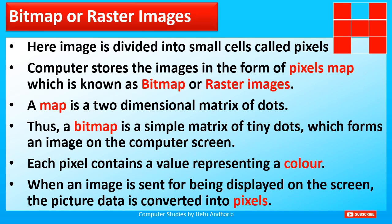You can right-click on your desktop and click on screen resolution to see your pixel count. For example, 1366 multiplied by 768 gives approximately 10,49,088 pixels. By setting the screen resolution to more pixels, clarity keeps increasing. A pixel is a small dot on the computer screen, and a bitmap is a simple two-dimensional matrix of tiny dots — rows and columns — that forms an image on the screen.